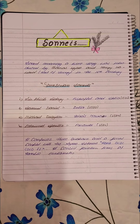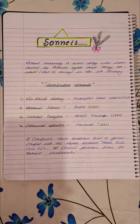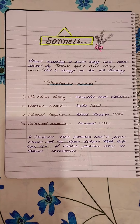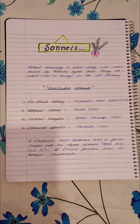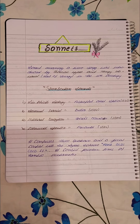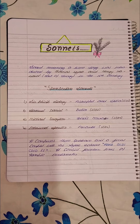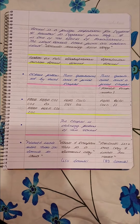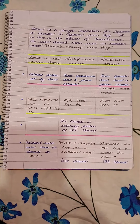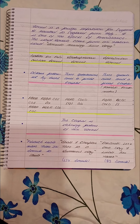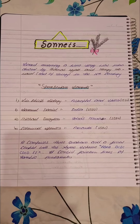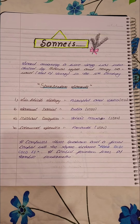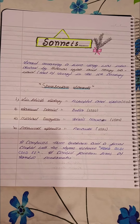Hello everyone. Today we'll be seeing the origination of the sonnets. It is said that the sonnet is a foreign importation — we'll be seeing why that is so. We'll also see the difference between the Italian or Petrarchan sonnet, the Shakespearean sonnet, and the Spenserian sonnet. The first question that comes to mind is: what is a sonnet?